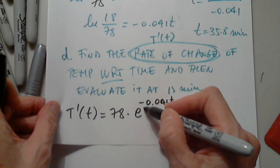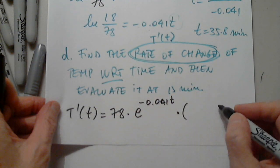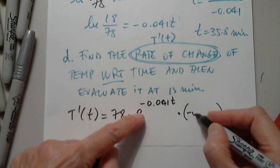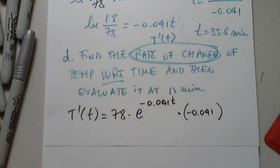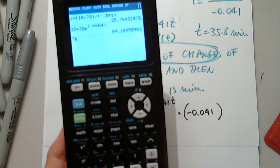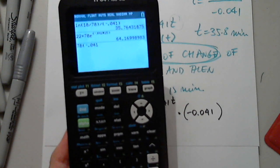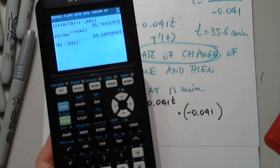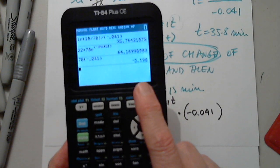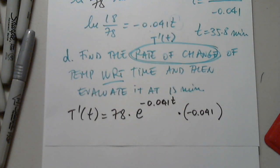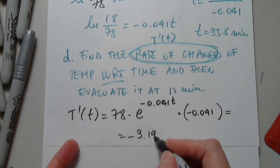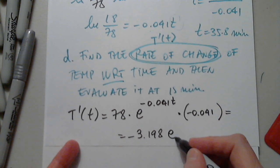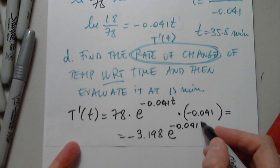When I differentiate the inner function negative 0.041t, I get negative 0.041. I'll multiply 78 by negative 0.041 to simplify: 78 times negative 0.041 equals negative 3.198. So T prime of T equals negative 3.198 times e to negative 0.041t.